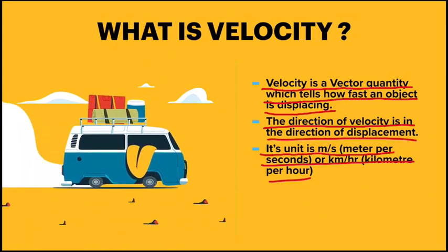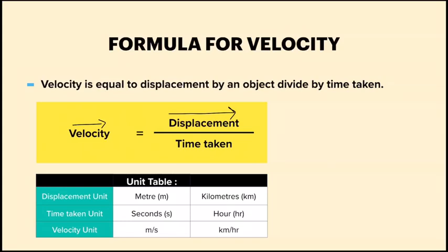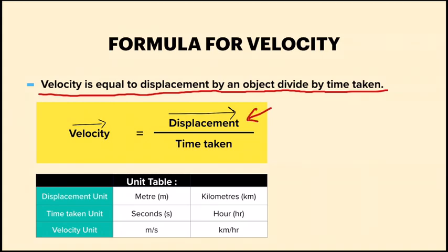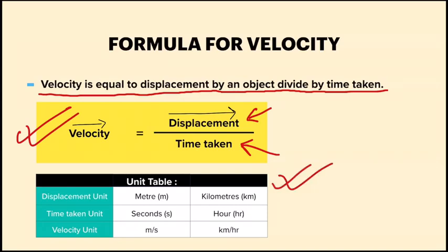Let's come to the formula of velocity. Velocity is equal to displacement of an object divided by time taken. Displacement is in the numerator and time taken is in the denominator. If you remember the formula of speed: speed uses distance on top and time taken on the bottom. For velocity, we use displacement on top and time taken on the bottom. This is the formula for velocity, and we have the unit table which is same as before.